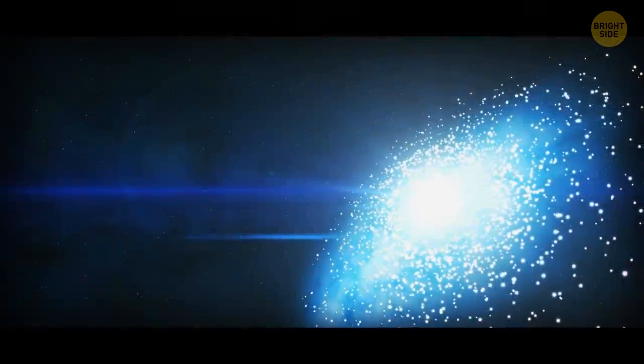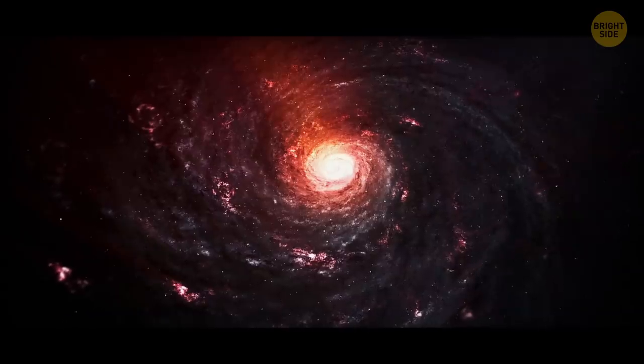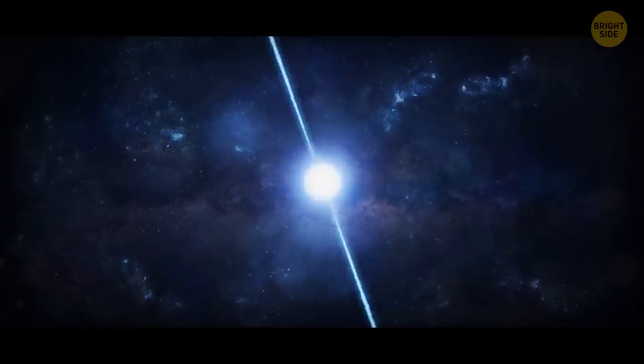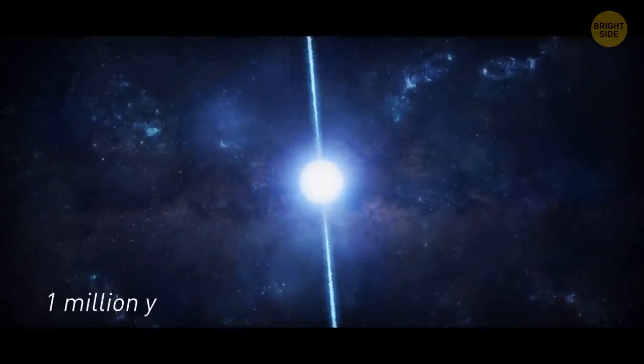A magnetar is a neutron star that is small and has a huge mass compared to ordinary stars like the Sun. But they have the strongest magnetic field in the entire universe. Their lifetime is very short, though. Only one million years.